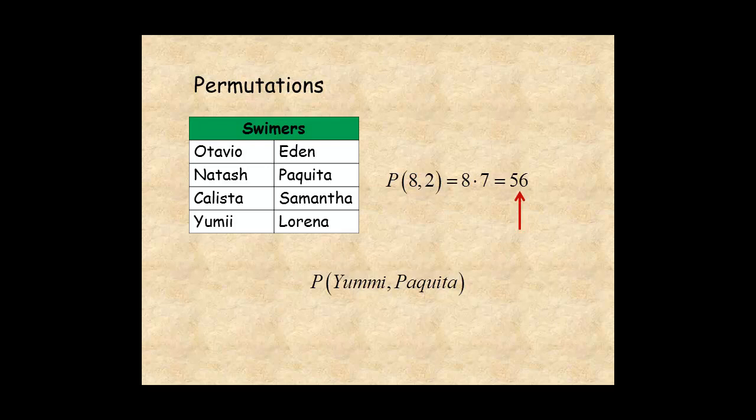Then, the probability of Yumi finishing first and Paquita second is one chance in 56.